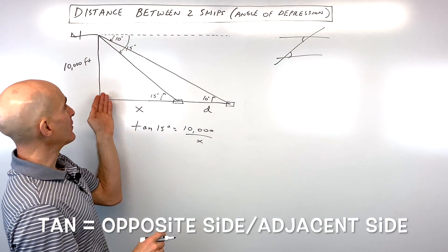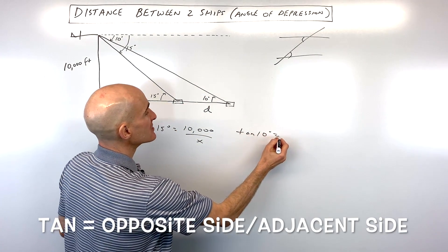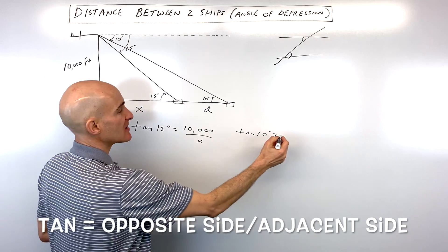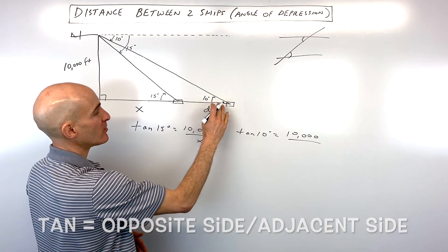Now for this larger triangle here, we're going to do the same thing. We're going to say the tangent of 10 degrees is equal to the opposite side, which is 10,000, over the adjacent side, which is x plus d.